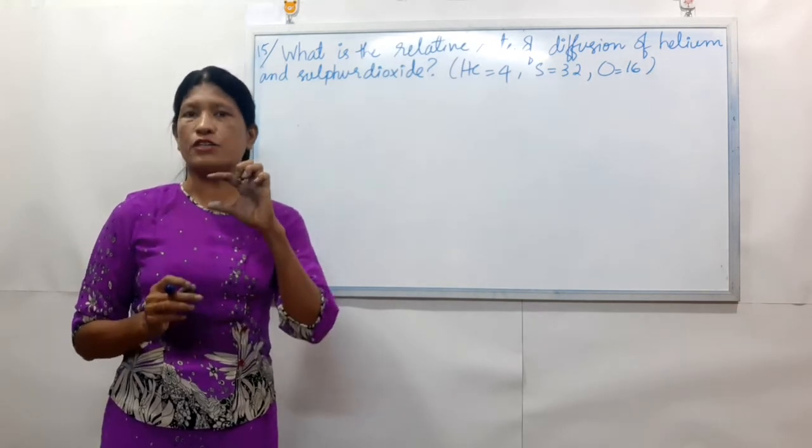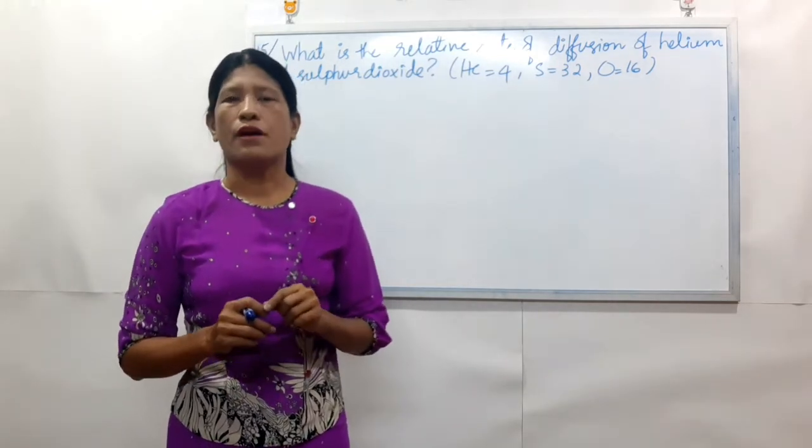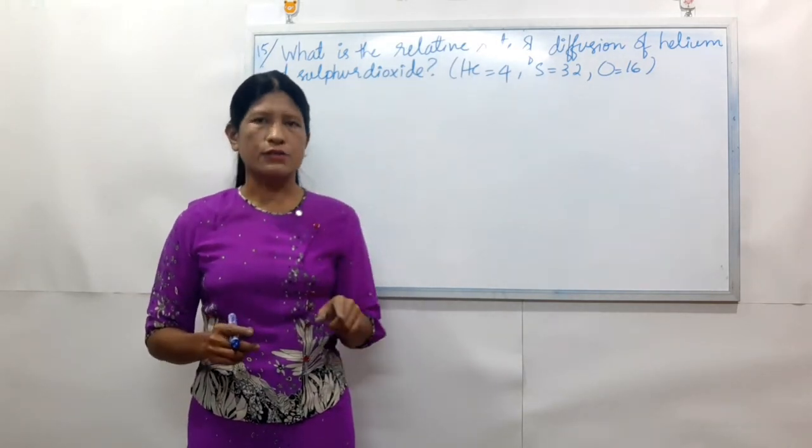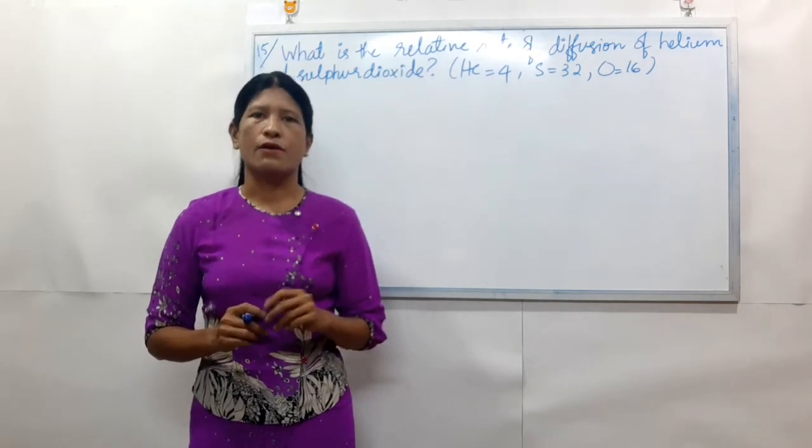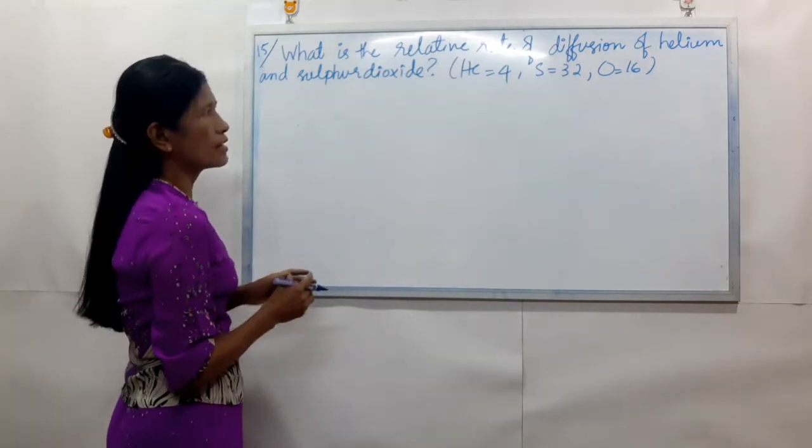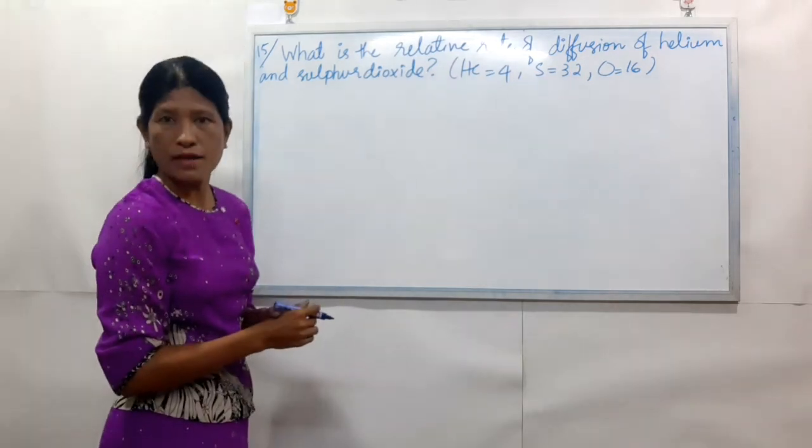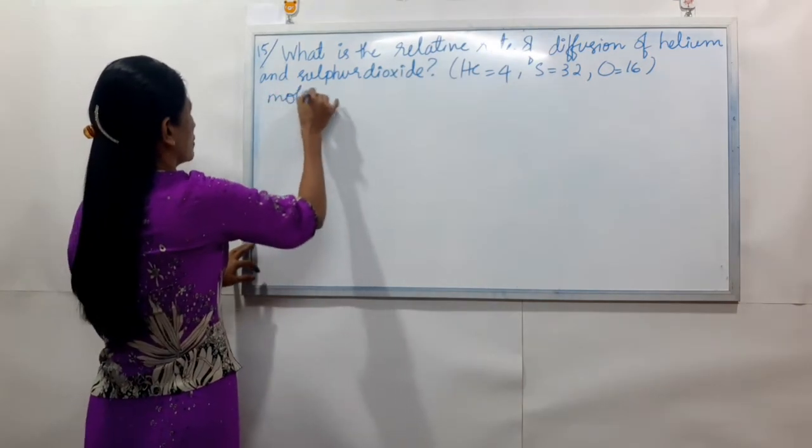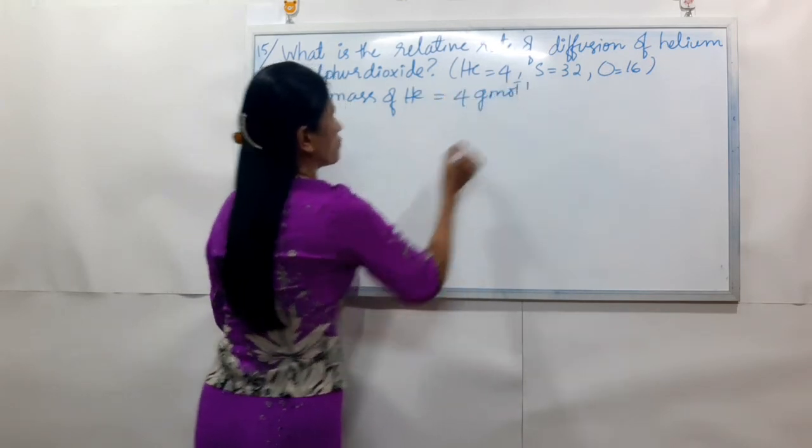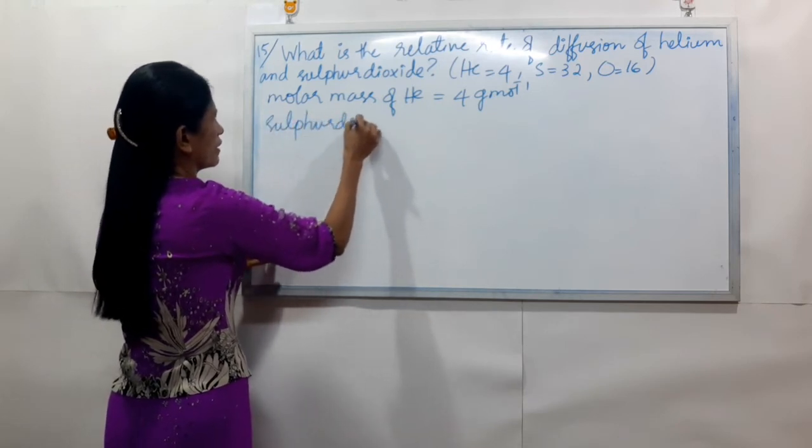The rate of diffusion of helium is R_He. The rate of diffusion of sulfur dioxide is R_SO2. So R_He by R_SO2. R1 by R2 equals the ratio.